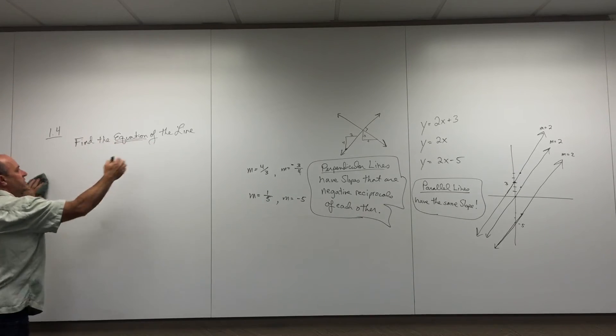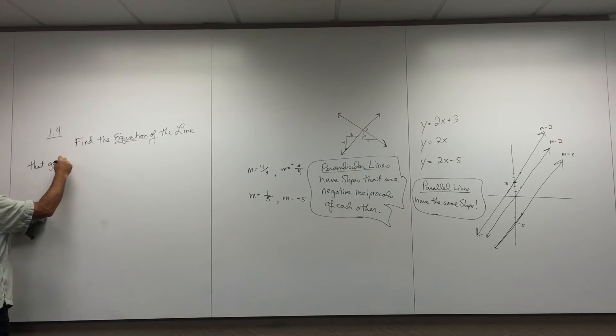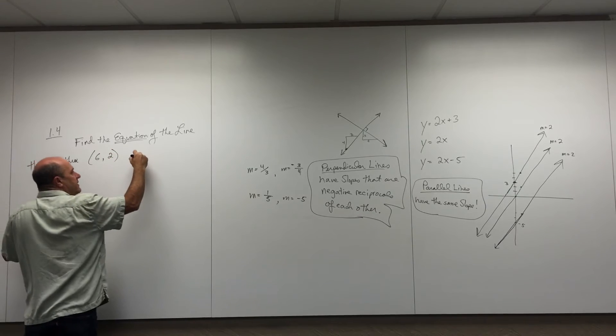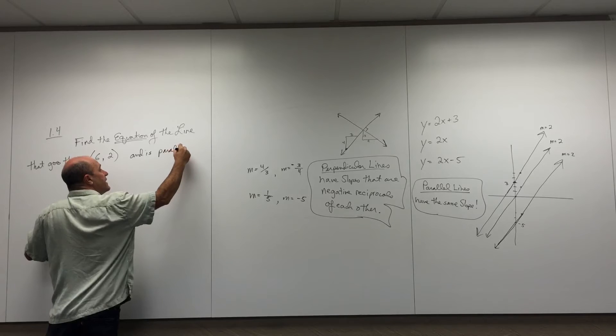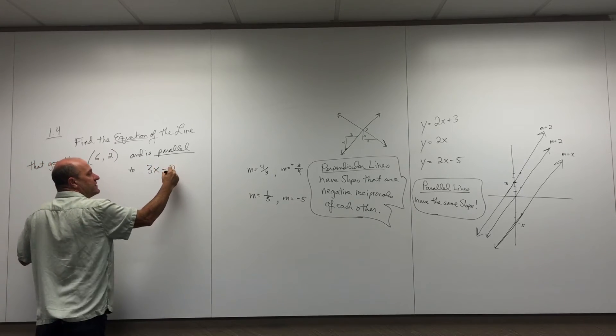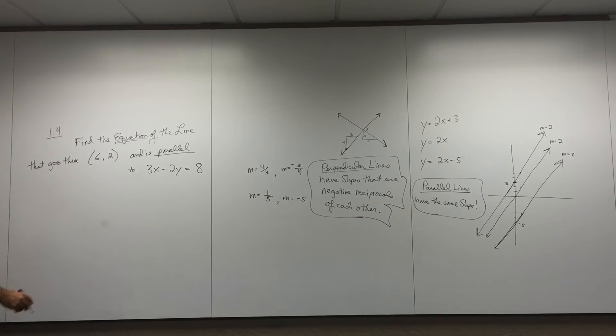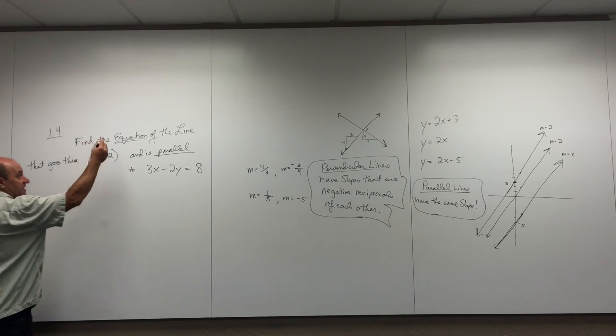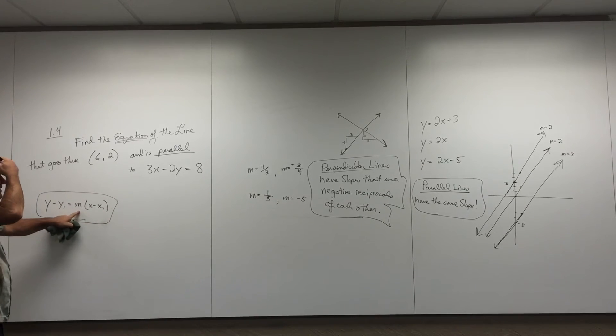It usually shows up in a problem like this. Find the equation of the line that goes through a point, 6, 2, and is parallel to this line: 3x minus 2y equals 8. So I'm looking for an equation of a line that goes through this point, and it's parallel to this. I feel like when someone says find the equation of a line, my point-slope formula works real well for me. But what I need to use this formula is I need a slope, which I don't feel like I got. But I do have a point. I wish I knew this slope. I wonder what the slope of my line is.